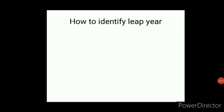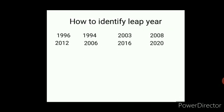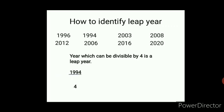How to identify a leap year? There are some years given on your screen. Any year which can be divisible by 4 is a leap year. For example, let's take 1994 — if we divide it by 4, it is not exactly divisible by 4, therefore it is not a leap year. 2020, if divided by 4, is fully divisible, therefore 2020 is a leap year.